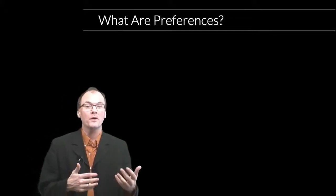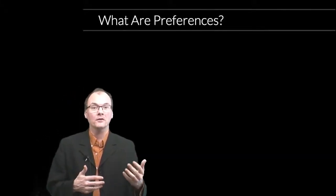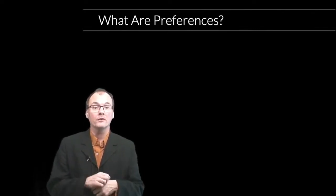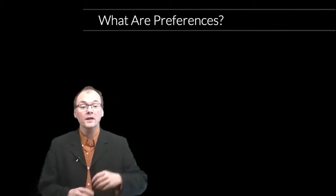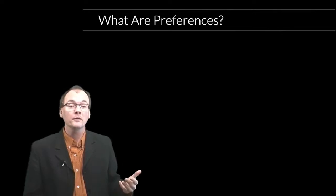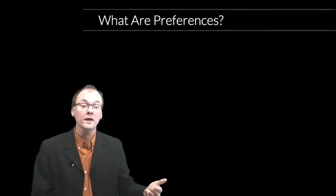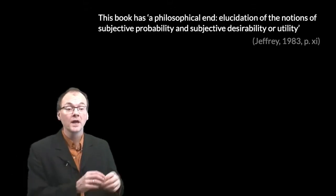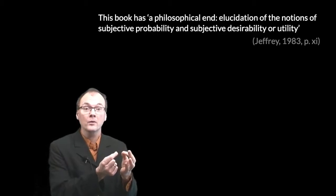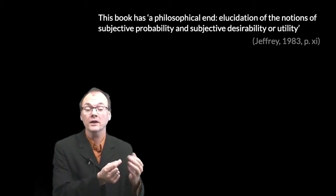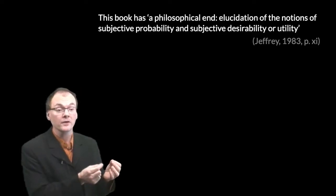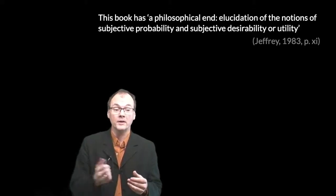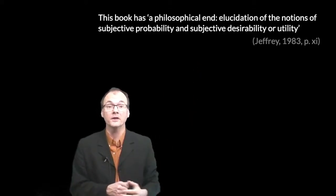So far we've been thinking about the kind of representation of actions and outcomes that would be useful for decision theory. Now it's time to construct the decision theory itself. Now given that I've called this 'what are preferences,' you might be surprised to see that this is where we're already going to give you the construction of decision theory. The reason for that is very simple. The primary concern we have as philosophers with decision theory, at least for the purposes of this course, is that it could provide an elucidation of the notions of subjective probability and what Geoffrey calls subjective desirability — and I say preference.